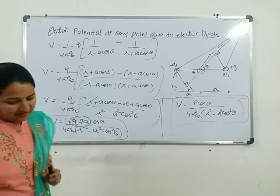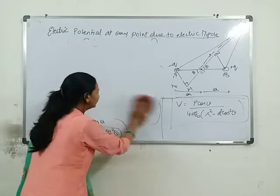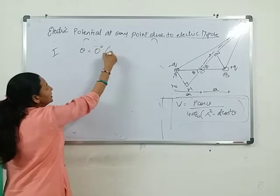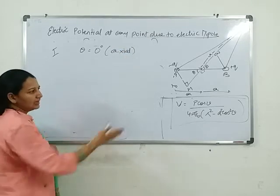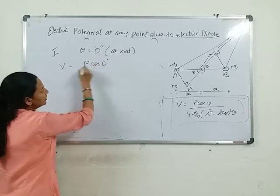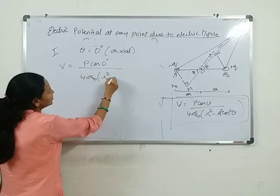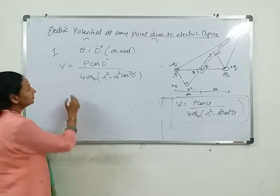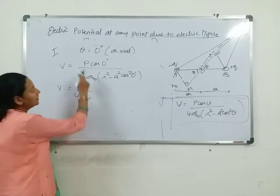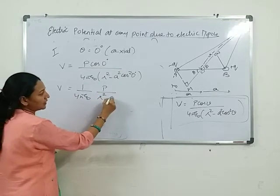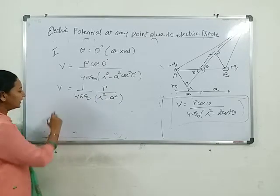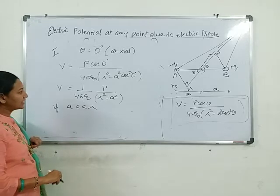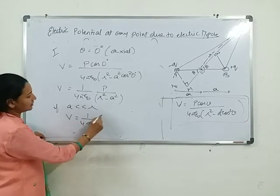Case 1: when point P lies on the axial line, such that angle theta is equal to 0 degrees. Substituting into the formula: cos 0 degree is equal to 1. So V is equal to one upon four pi epsilon zero, P upon r squared minus a squared. And if a is much much smaller than r, then V is equal to one upon four pi epsilon zero, P upon r squared.